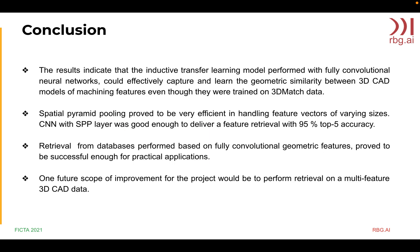From the result, it was conclusive that the model could effectively capture and learn the geometric similarity between 3D CAD models of machining features, even though the model was trained on 3D matched data. A convolutional neural network with a spatial pyramid pooling layer was good enough to deliver feature retrieval with 95% top-5 accuracy. The retrieval model proved to be successful enough for practical applications. The feature extraction also worked for multiple features on a single CAD file and could work well in a multi-feature dataset.